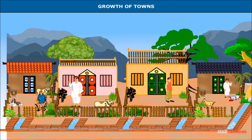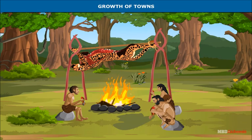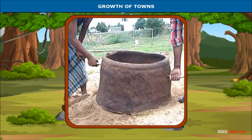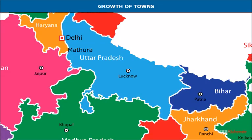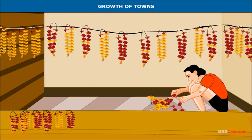Material remains of this period throw light on the life in some of these early cities. Sculptures and carved scenes depict people's lives in towns, villages, and forests. Archaeologists have also found a number of ring wells made of baked clay or ceramics, which were used as toilets, drains, or garbage dumps. The most important town was Mathura, situated at the crossroads of two important trade routes — one from the northwest to the east and the other from the north to the south.